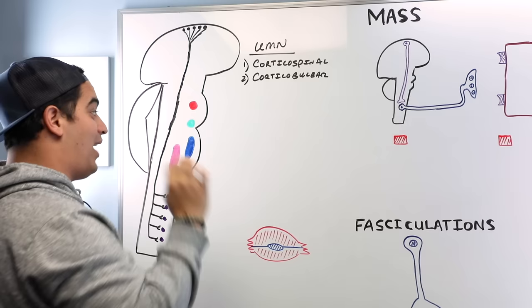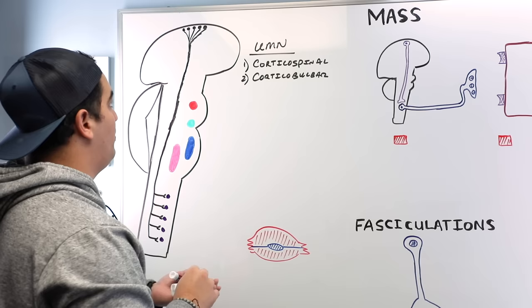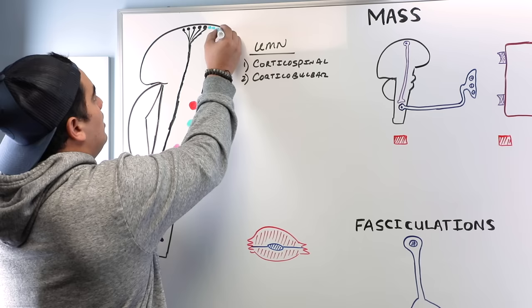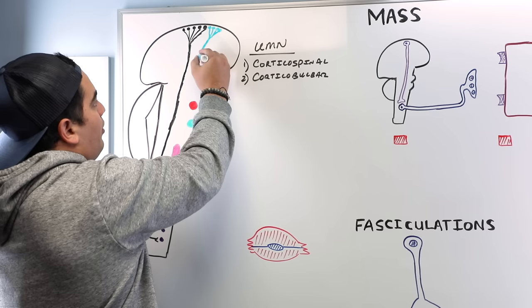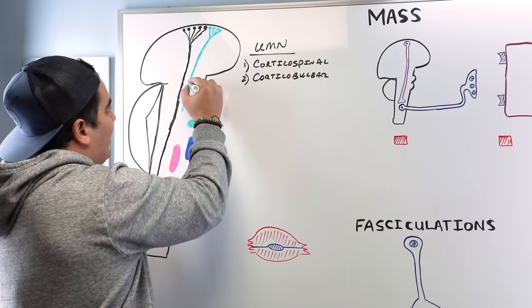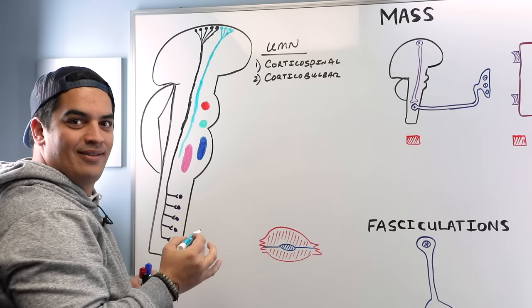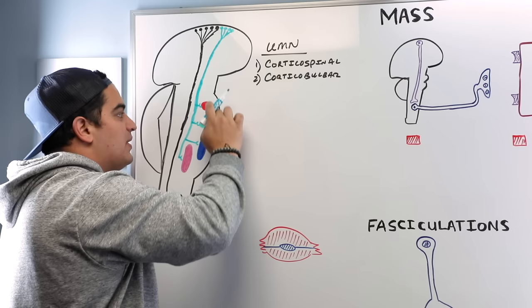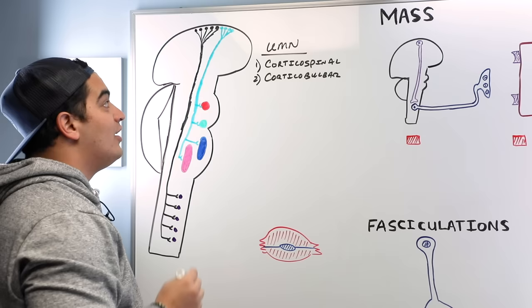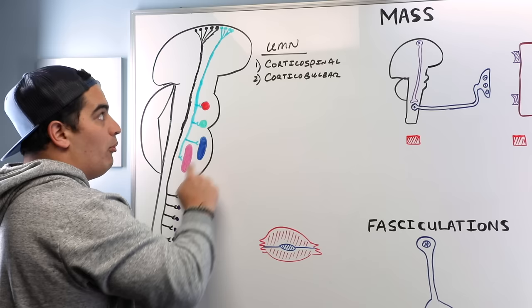The corticobulbar tract takes a similar course — motor neurons from the premotor, primary motor, and supplementary motor areas give off axons that travel down through the corona radiata, internal capsule, and midbrain. At roughly the mid-level of the pons and below, the corticobulbar tract gives off axons to specific cranial nerve nuclei located in the pons and medulla. So corticospinal and corticobulbar together constitute our upper motor neurons.